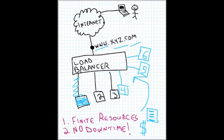There are more intelligent things you can do with a load balancer. Round robin load balancing sends a request to one server, then the next, then the next, cycling around — almost like dealing cards in a card game. But it doesn't have to be that simple.